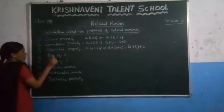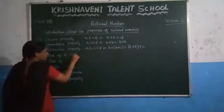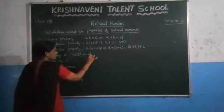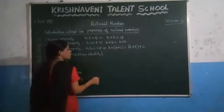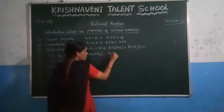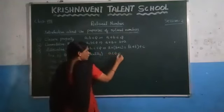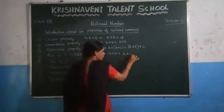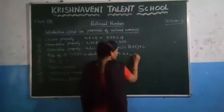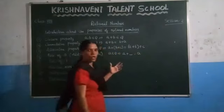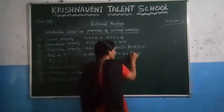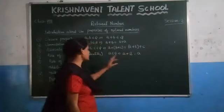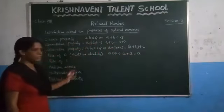The next property is the role of zero. This role of zero we call it as the additive identity. What this property says: if you consider any rational number, you have to add one number such that you get the same number as the result. The number you have to add is zero. That zero we call the additive identity.